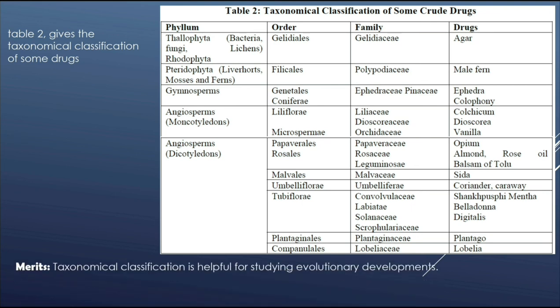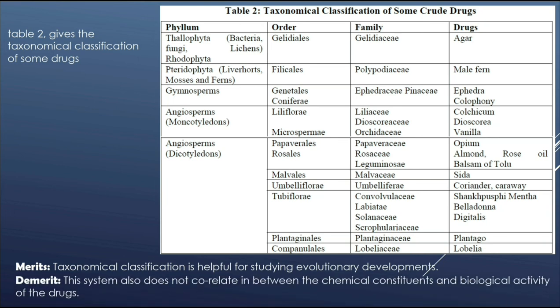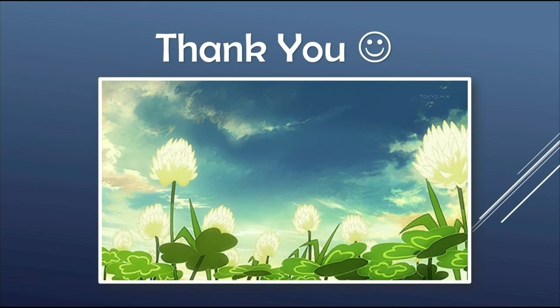The merit of taxonomical classification is that it is helpful for studying evolutionary developments. The demerit is that this system also does not correlate between the chemical constituents and biological activity of the drugs. So, the taxonomical classification is completed here. Thank you for watching this video.